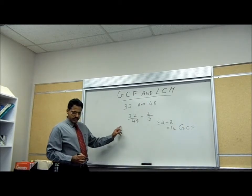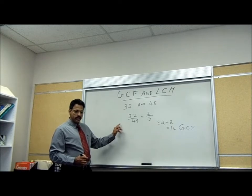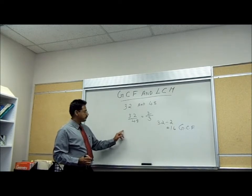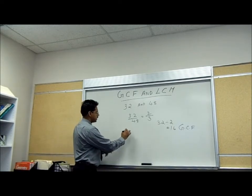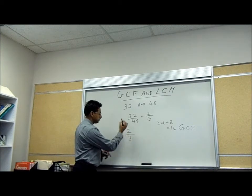We got the GCF. The next step, we're going to find the LCM. Let's take the reduced lowest term, 2 over 3.